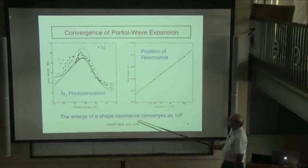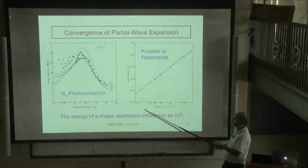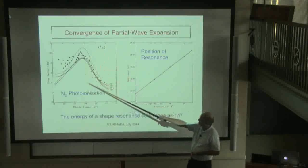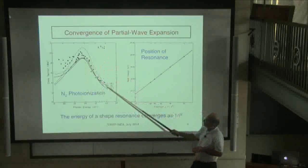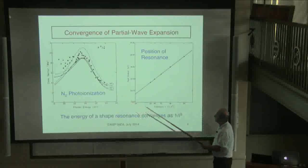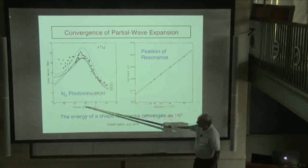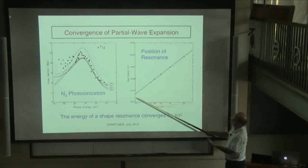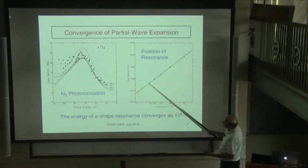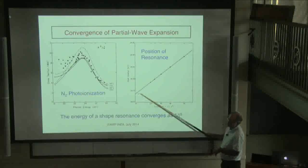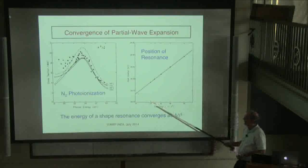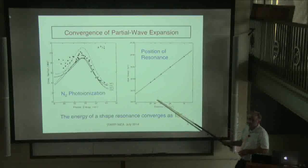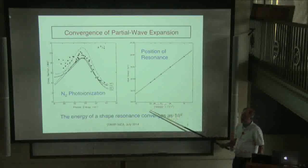Just to show you why this partial wave single-center expansion, at least for small systems, actually can work — this is the photo-ionization of N2 from the ground state, and what I'm looking at is the position of this resonance. The non-resonant part is not very sensitive to the partial wave expansion, but the position of the resonance can be fairly sensitive. If you plot the position of that resonance in the photon energy (~28 eV) as a function of 1/L³, it converges fairly quickly — even at L=50, you're only about 0.05 eV away from where that resonance is.